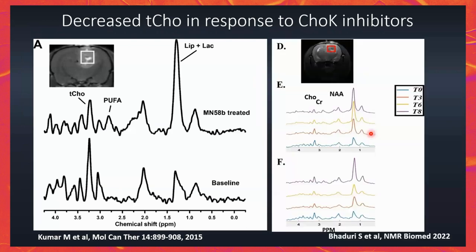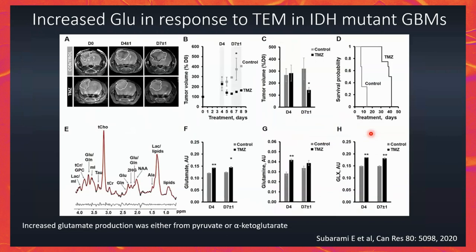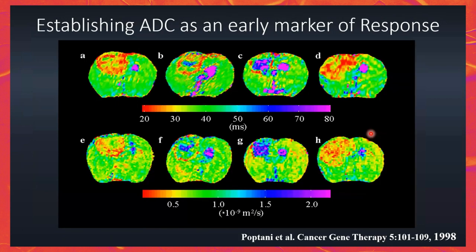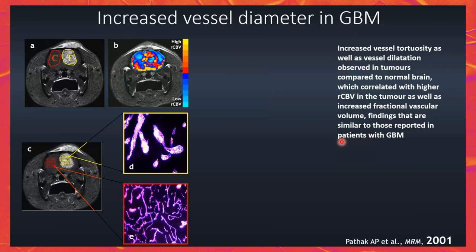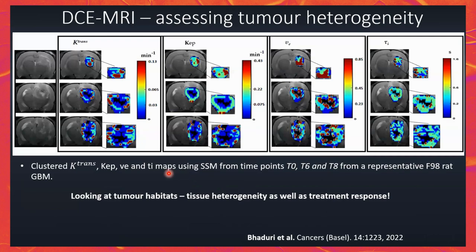Choline changes are seen in recent cases as well. If you have an IDH mutant tumor, you can see changes in glutamate. Diffusion changes also occur — when the tumor responds early you see diffusion changes, when it does not, ADC remains the same. CBV is high in animals and in humans, especially because of dilated vessels. You can also look at tumor heterogeneity and tumor habitats using DCE MRI.